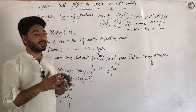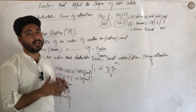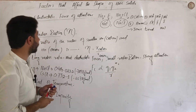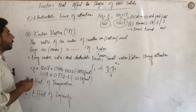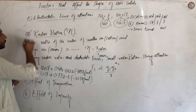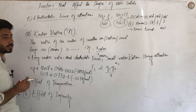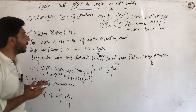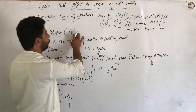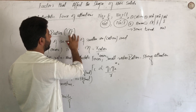So the shape changes according to the electrostatic force of attraction. Now the second point for discussion is the radius ratio. The radius ratio symbol is ρ (rho).